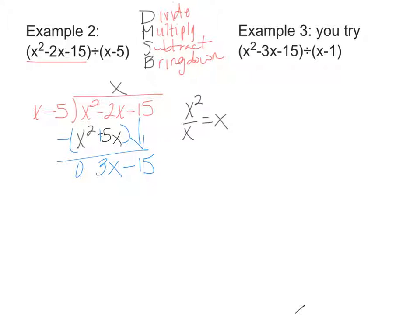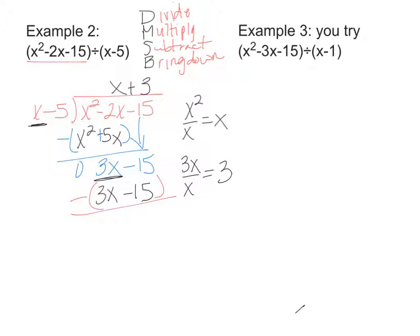Then I repeat the process: divide 3X by X — 3X divided by X is equal to 3 — so I put a positive 3 on top. Then I multiply 3 times X to get 3X, and 3 times negative 5 to get negative 15. Then I subtract: 3X minus 3X is 0, and negative 15 minus negative 15 is also 0. So when I have no remainder, that means it's a factor, and my final answer is X plus 3.